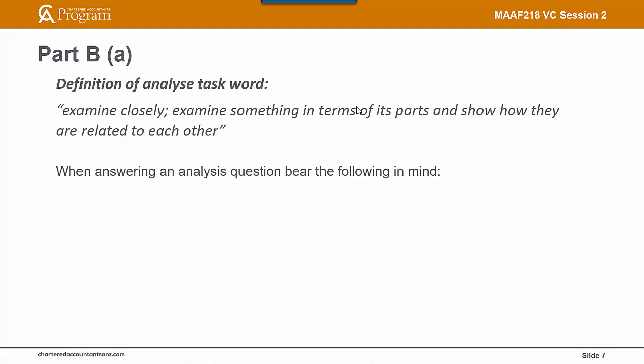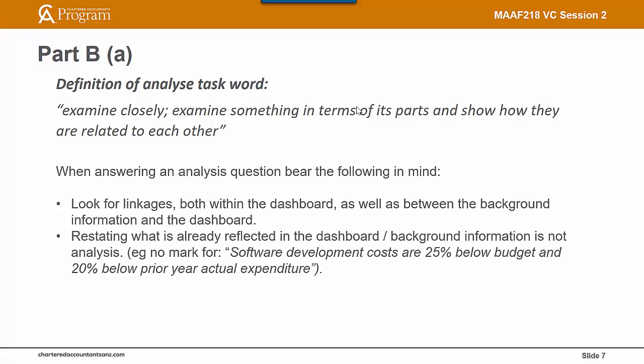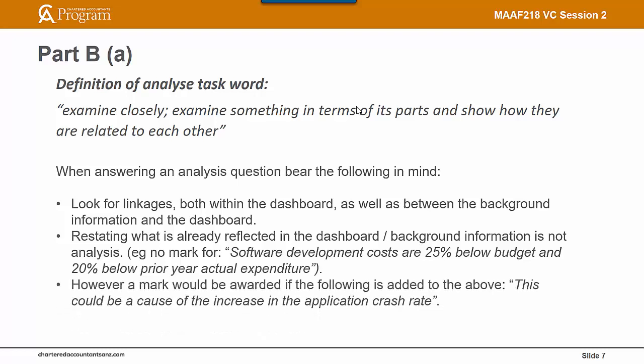A couple of points to bear in mind when doing analysis. First, look for linkages within the dashboard itself — for example, expenditure on software development could be linked to the application crash rate, and marketing expenditure could be linked to the level of revenue or market share. Also look at linkages between the business strategy outlined in the background information and the dashboard itself. Restating what is already reflected in the dashboard or background information is not analysis — no mark would be awarded for simply stating that software development costs are 25% below budget and 20% below prior year actual. However, a mark would be awarded if the following was added: 'A reduction in software development costs could be a cause of the increase in the application crash rate.' A linkage has been identified between two separate items in the dashboard.